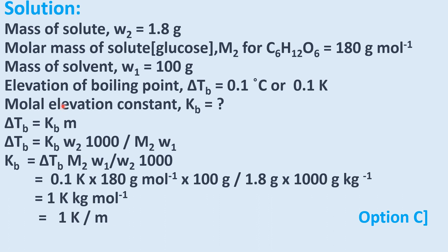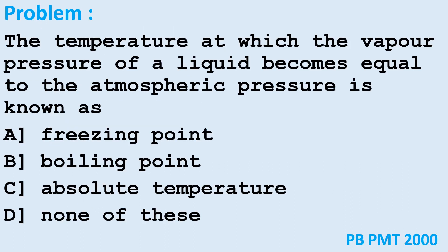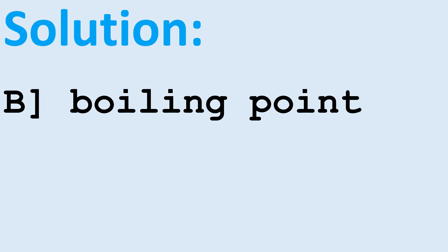The temperature at which the vapor pressure of a liquid becomes equal to the atmospheric pressure is known as: option A freezing point, option B boiling point, option C absolute temperature, option D none of these. The answer is boiling point — option B is correct.